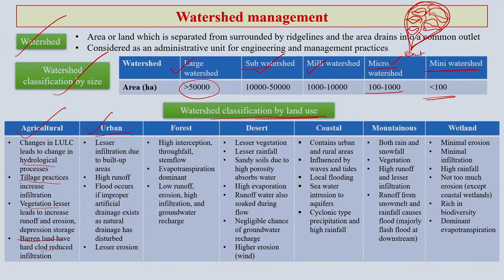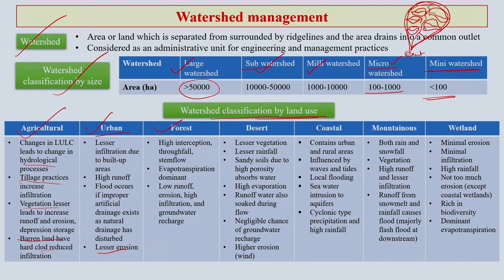Then we have the urban class of watershed. These watersheds have lesser infiltration due to built-up areas, heavy runoff, floods may occur due to improper artificial drainage, and lesser erosion. This kind of watershed is mostly found at the border area of urban and peri-urban areas.